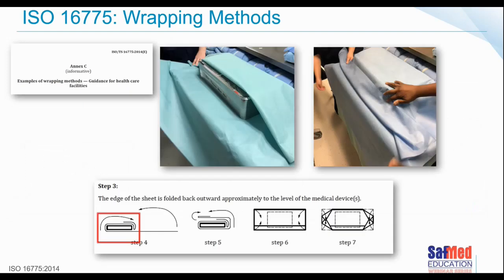One factor that really stood out, pointed out during local visits with international experts and observed during international visits watching wrapping techniques, is about the very first fold — the first part of the wrap covering the entire surface of the set. We often go only halfway or just towards the end, but the illustrations really refer to taking your first fold all the way over the container. That's one area we really need to focus on.